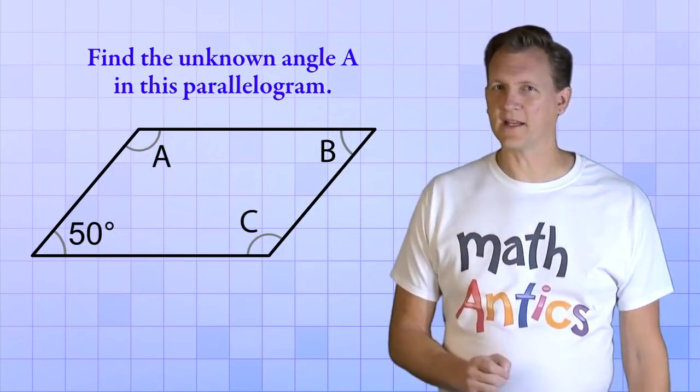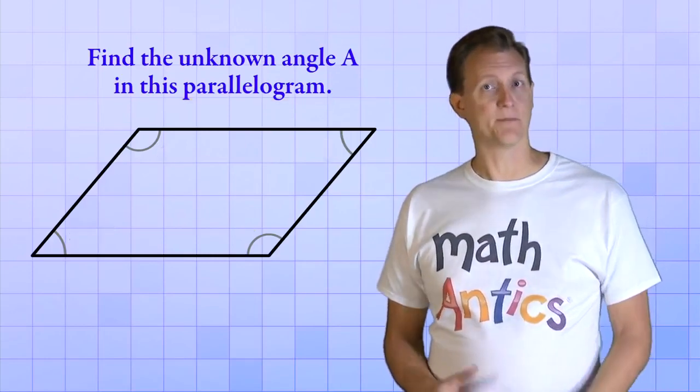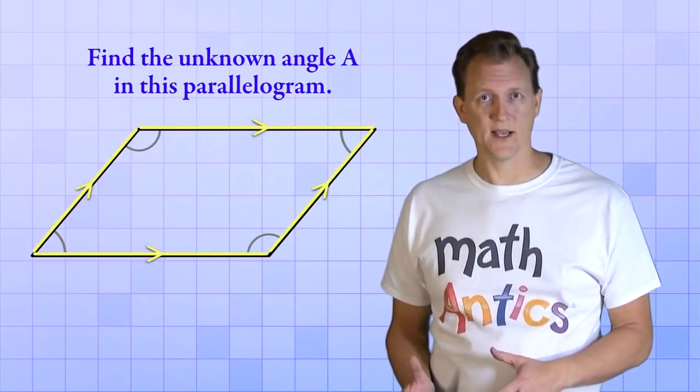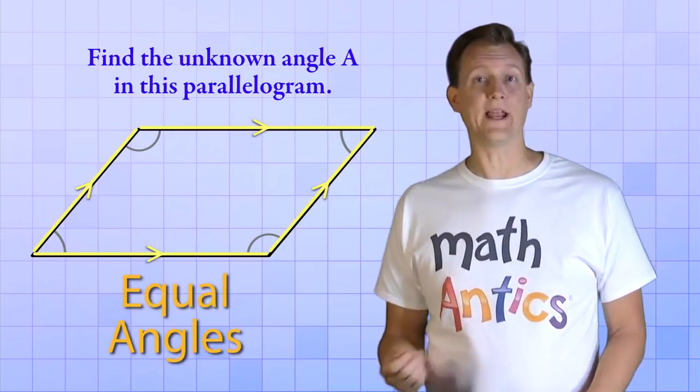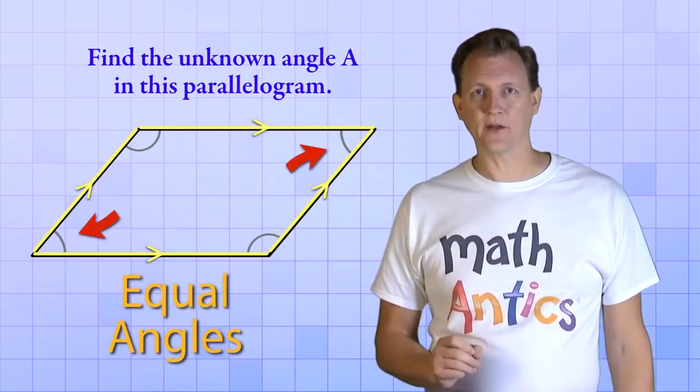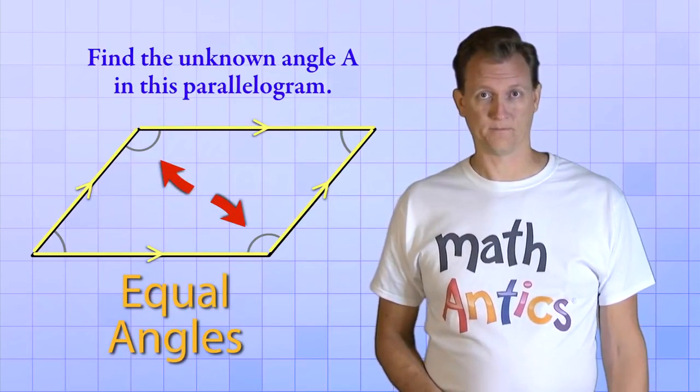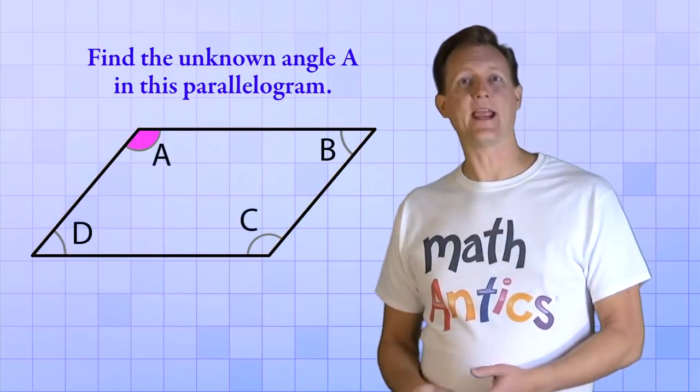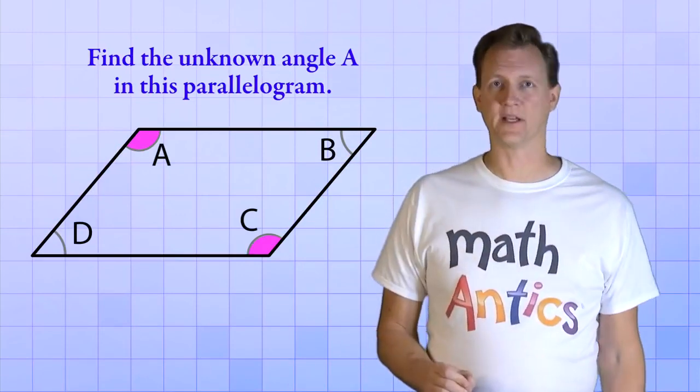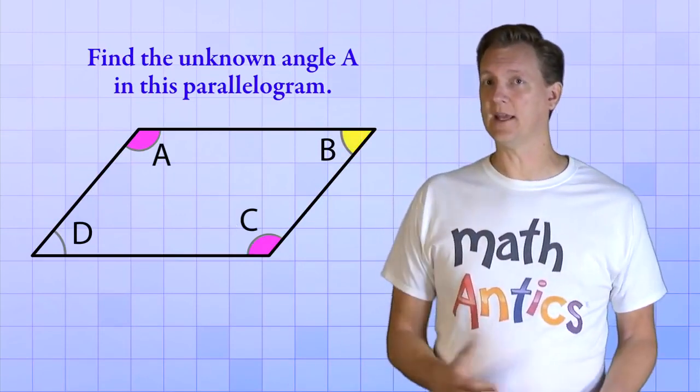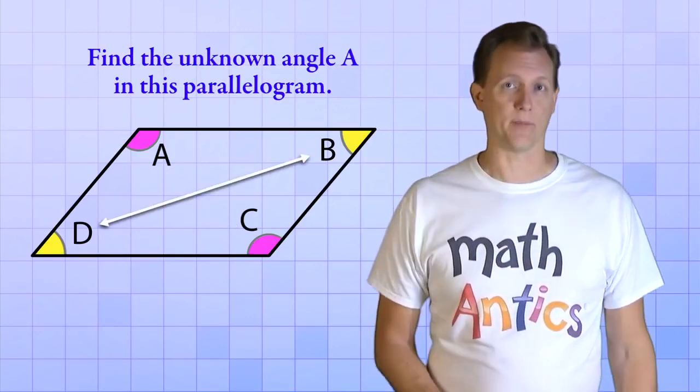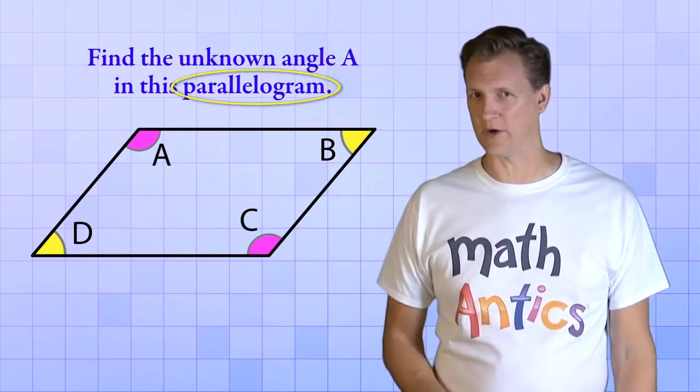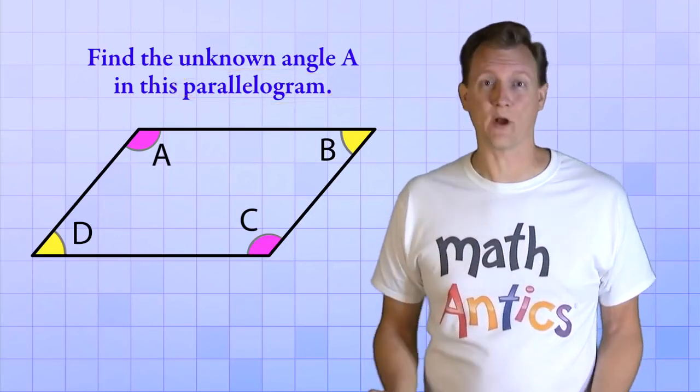To solve this problem, we need to know an important fact about parallelograms. Because parallelograms are always made from pairs of parallel sides, that means they also form pairs of equal angles. It's the opposite angles that form these pairs. For example, in this parallelogram, the angles A and C are equal because they're on opposite corners, and the angles B and D are equal because they're on opposite corners. Now remember, this is only true for parallelograms. This won't work for things like trapezoids.